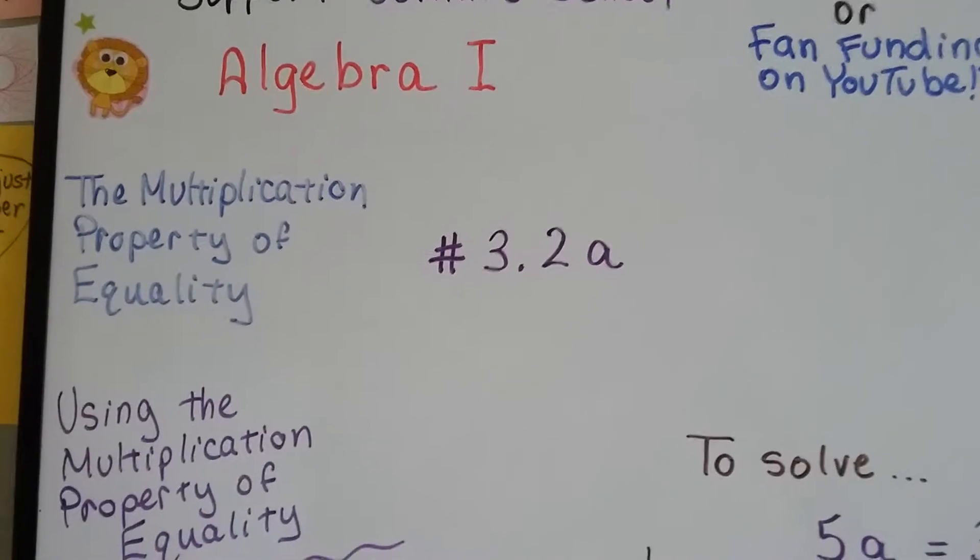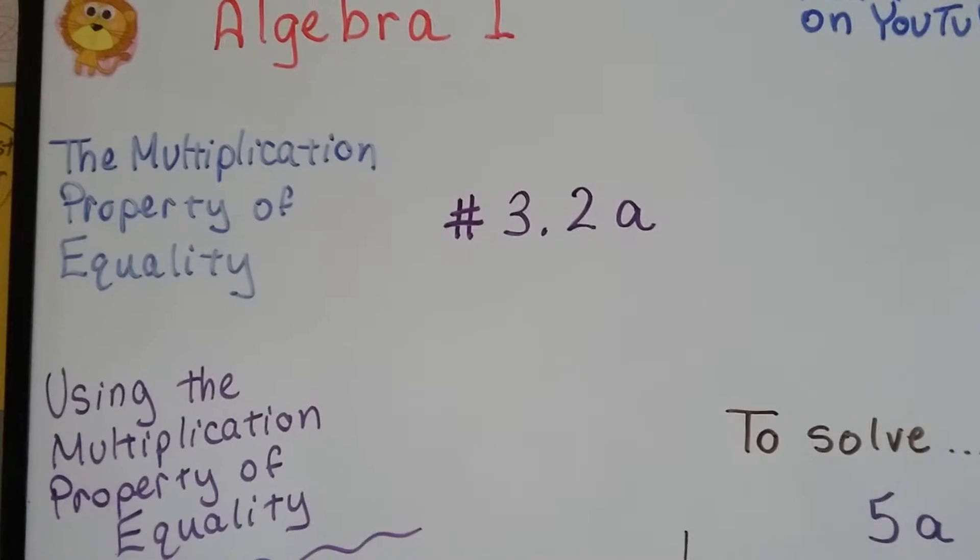Algebra 1, number 3.2a. We're talking about the multiplication property of equality in this unit.